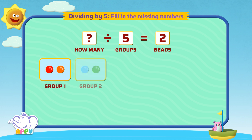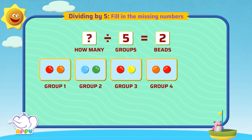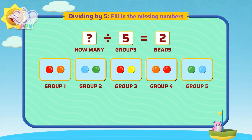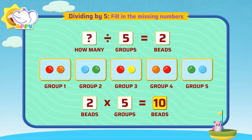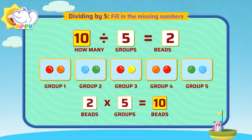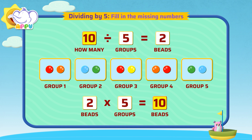We know that 2 beads in 5 groups equals 10. How do we do this? We use multiplication that we learned earlier. 2 times 5 equals 10. So the answer is 10. 10 divided by 5 equals 2. We write it as 10 by 5 equals 2.